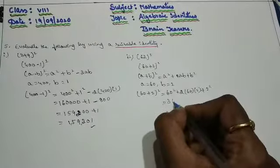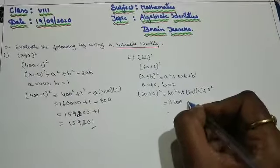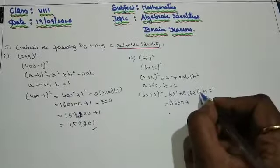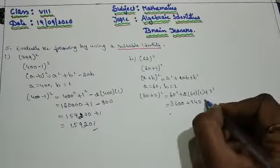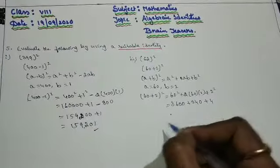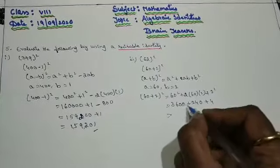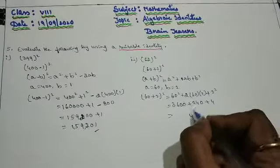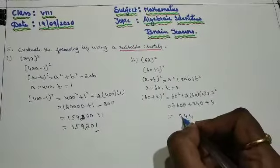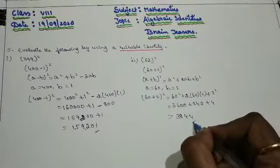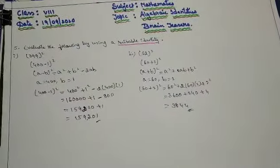Substitute in the identity: 60 plus 2 whole square equals 60 square plus 2 into 60 into 2 plus 2 square. Then 60 square is 3600. Plus 2 into 60 into 2 is 240. Plus 4. Add up: 3600 plus 240 plus 4. We get 3844.